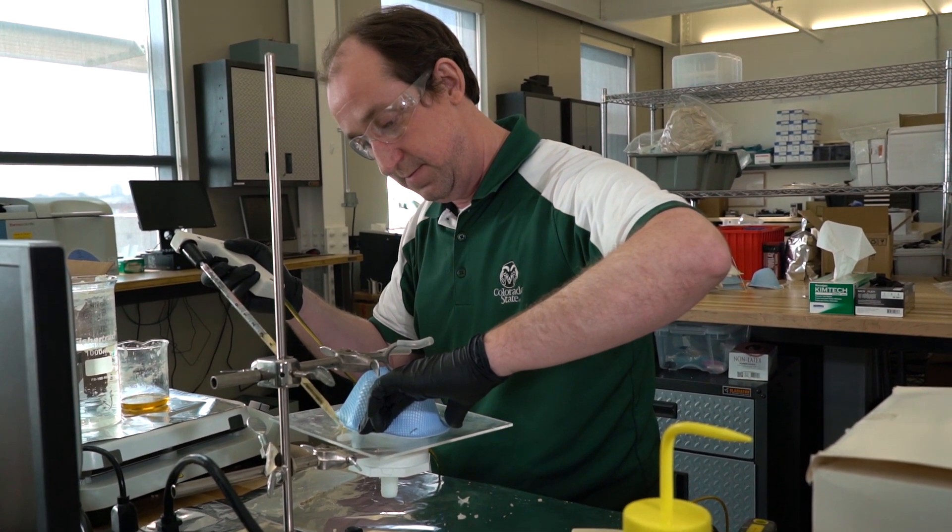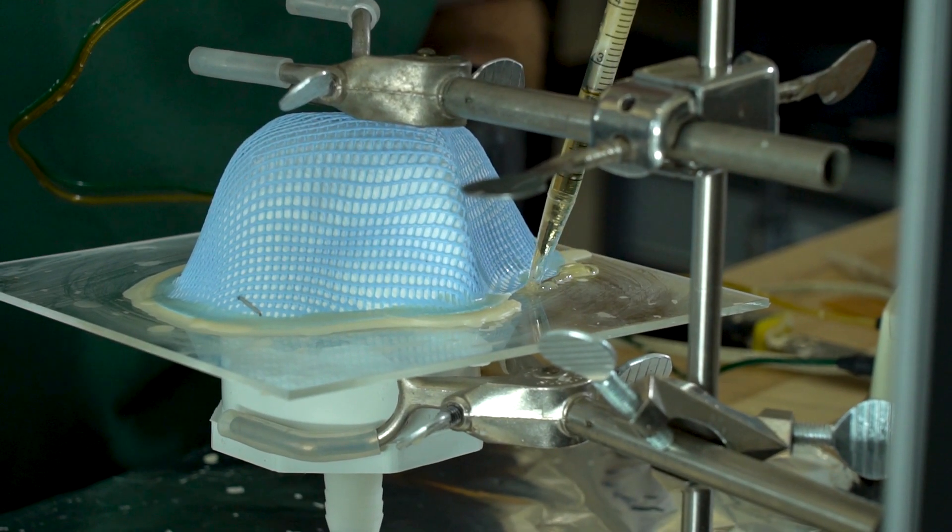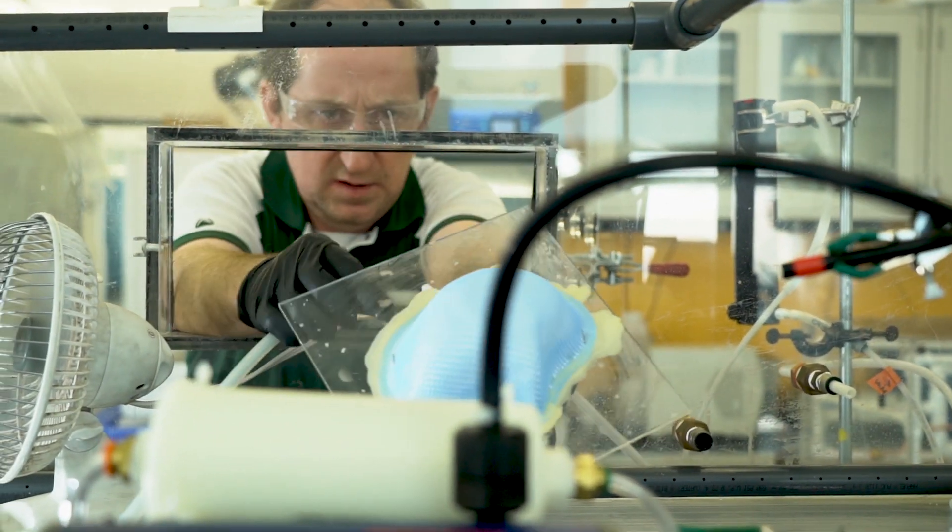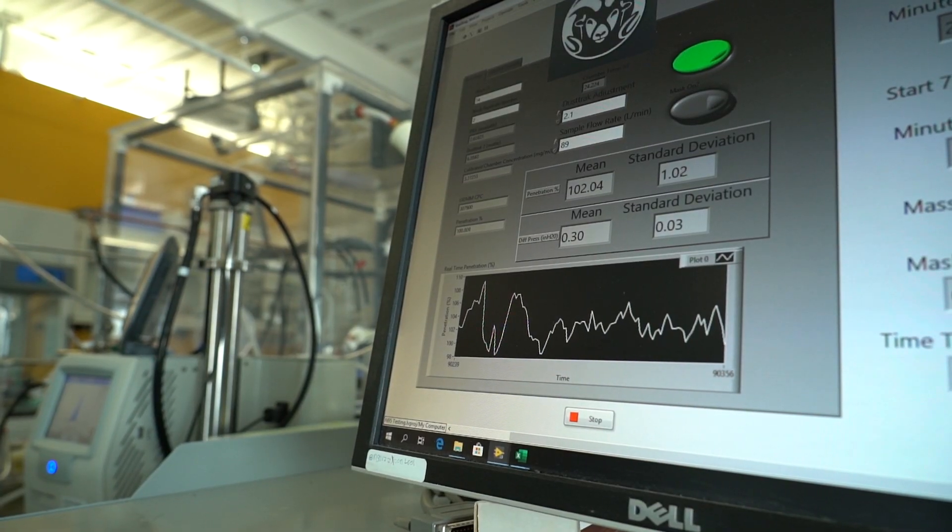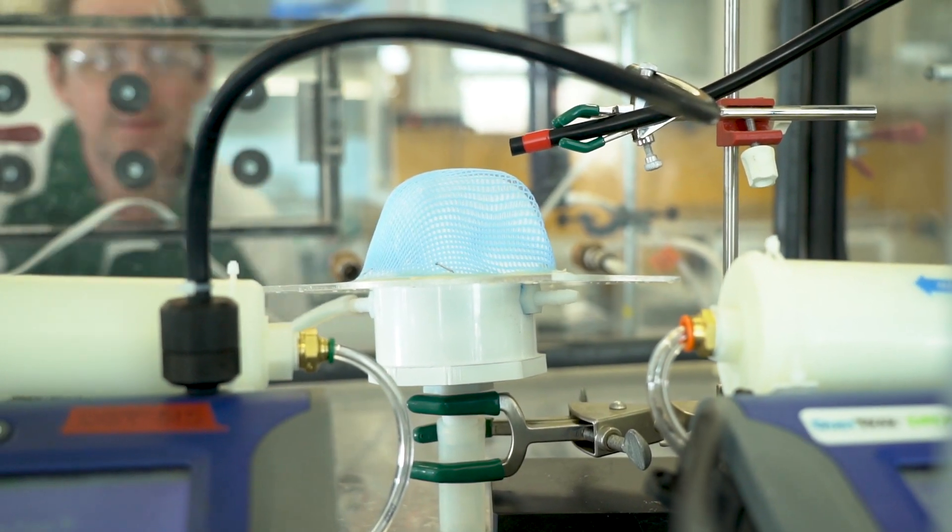The process in general starts with us taking a mask and sealing it down to a test fixture. It then goes into our aerosol chamber behind us where we flow air through the mask. We measure the amount of particles outside the mask and the number of particles in the mask. We can use that to get a really good estimation of how efficient the mask is.